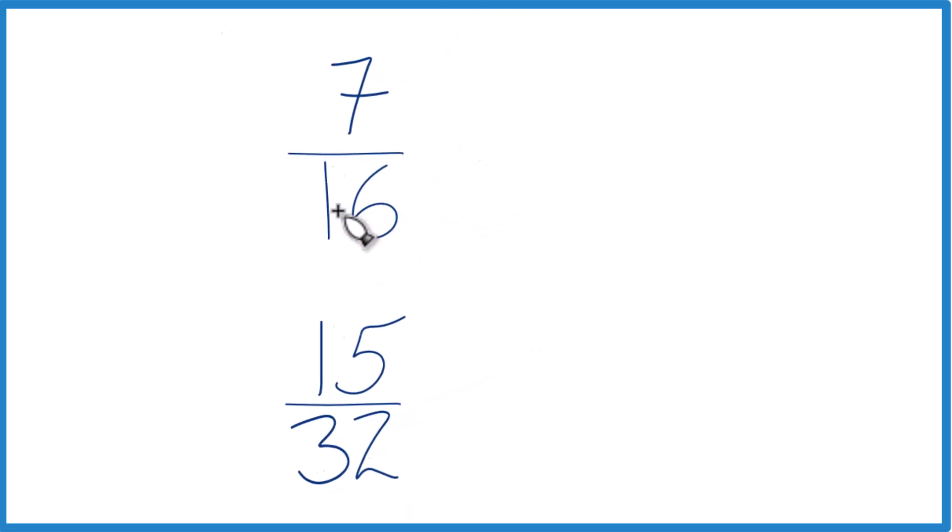Let's do this. Let's multiply 16 times 2, because 16 times 2, that's 32. And then down here we have 32. So let's just keep this the same, 15/32.